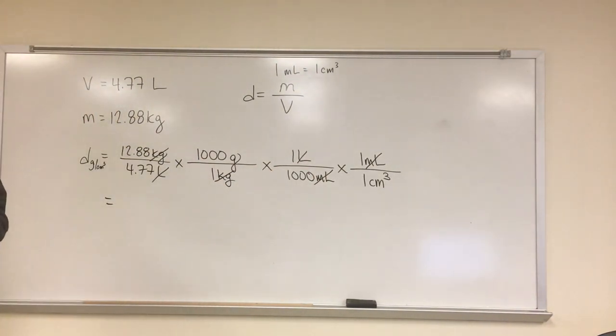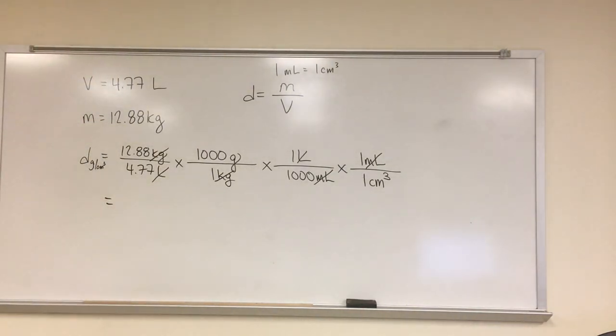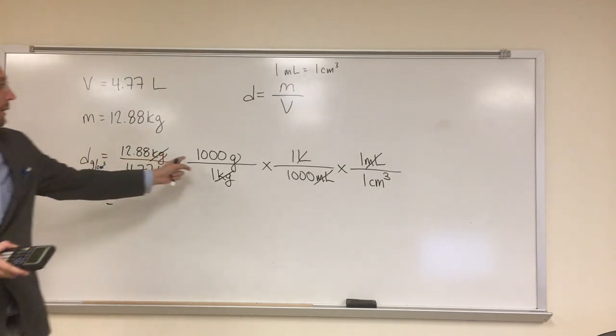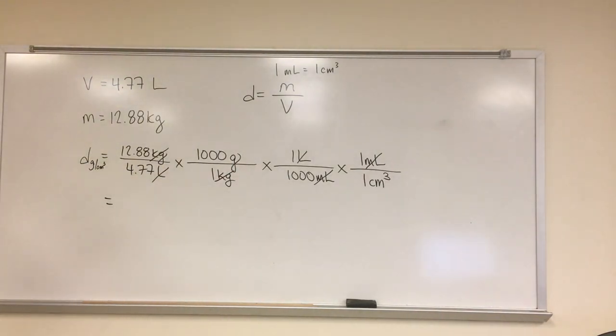So, now, all it is is a plug-and-chug problem, right? So, 12.88 divided by 4.77 multiplied by 1,000 divided by 1,000. So, those cancel out, too. Okay? So, 12.88 divided by 4.77.